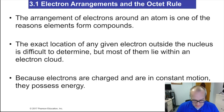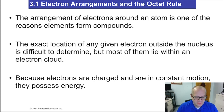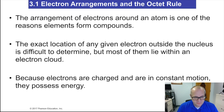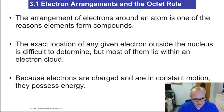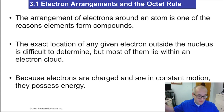To understand how atoms bond, you have to understand how electrons work. Electrons are extraordinarily complicated, but we're going to make it as simple as we can. You have to understand how electrons arrange themselves around an atom, around a nucleus. The arrangement of electrons around an atom is one of the reasons elements form compounds. The exact location of an electron outside the nucleus is very difficult to determine, but most of them lie within what's called the electron cloud.